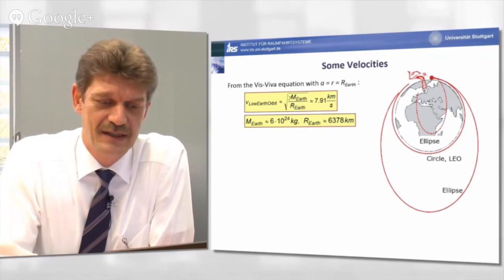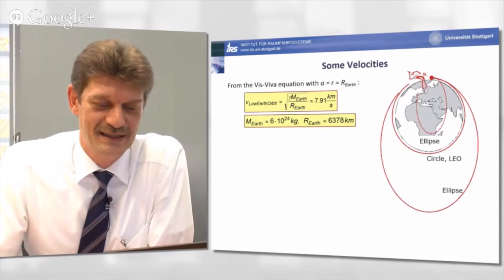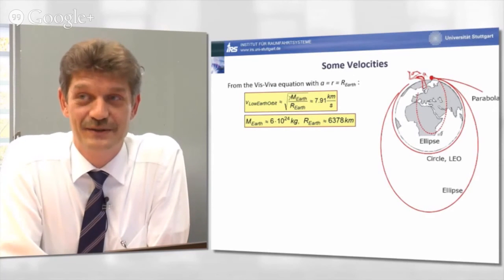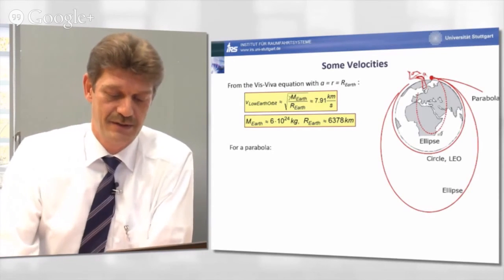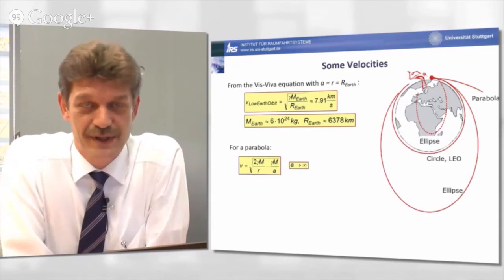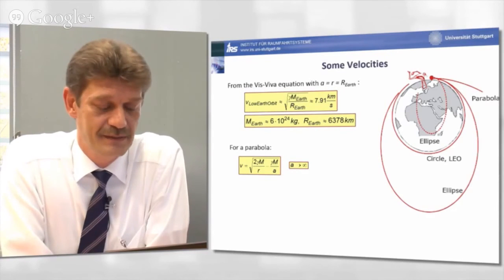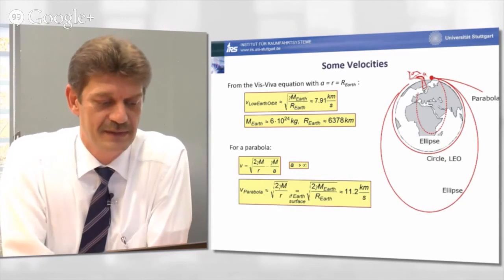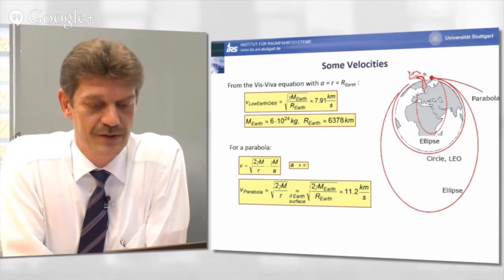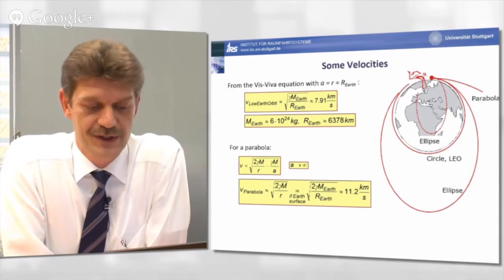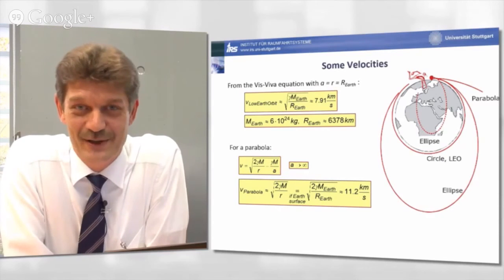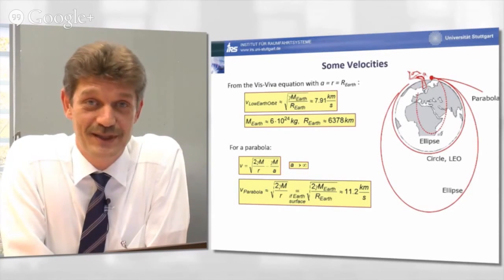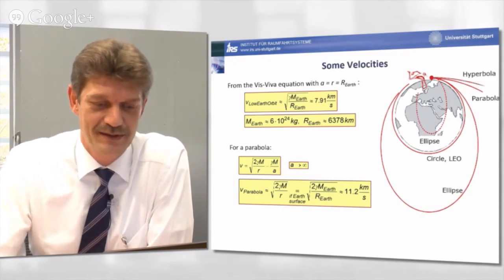And the question is now, how fast must you accelerate this ball in order to escape from the gravitational pull, which means to go in the parabolic orbit? Well, again, using the Vis-Viva equation for a parabola, now with the semi-major axis tending to infinity, which turns now to have a velocity at the Earth's surface in order to escape from the gravitational pull, which equals to 11.2 kilometers per second. If you accelerate to a higher velocity above 11.2 kilometers per second, then you will be on a hyperbolic orbit.